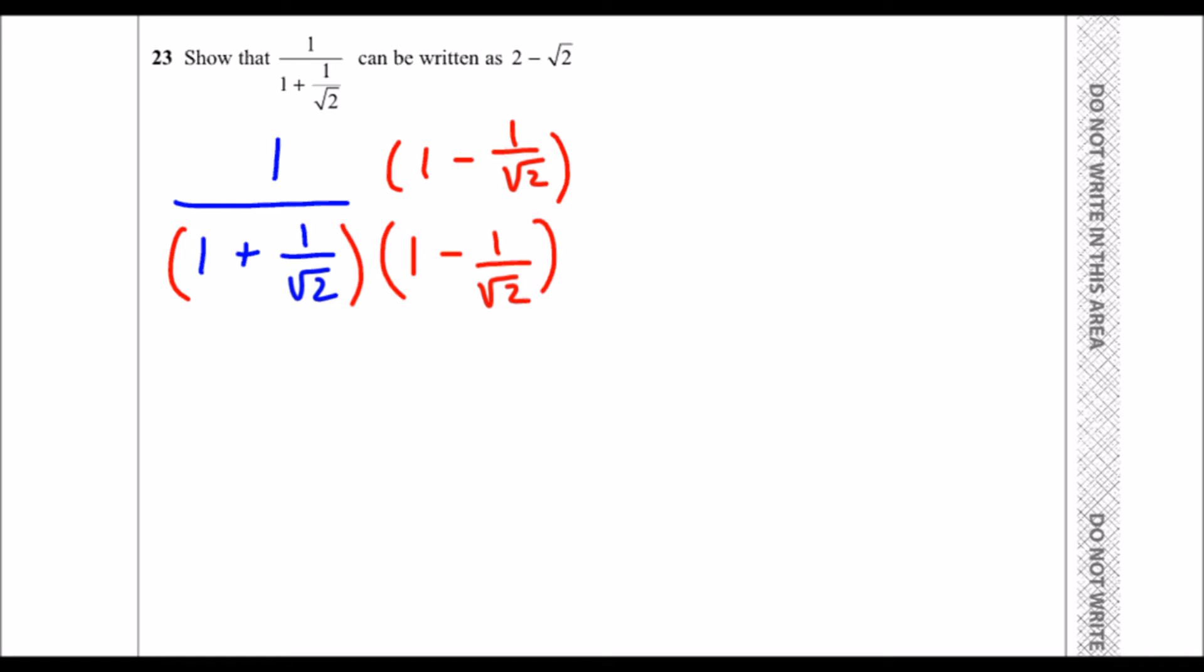Let's expand these brackets. On top, I have 1 minus 1 over root 2. On the bottom, 1 times 1 is 1, 1 times minus 1 over root 2 is minus 1 over root 2, 1 over root 2 times 1 over root 2, and 1 over root 2 times minus 1 over root 2.